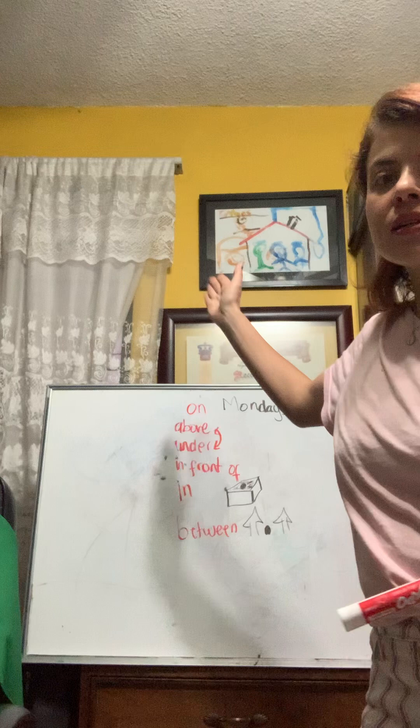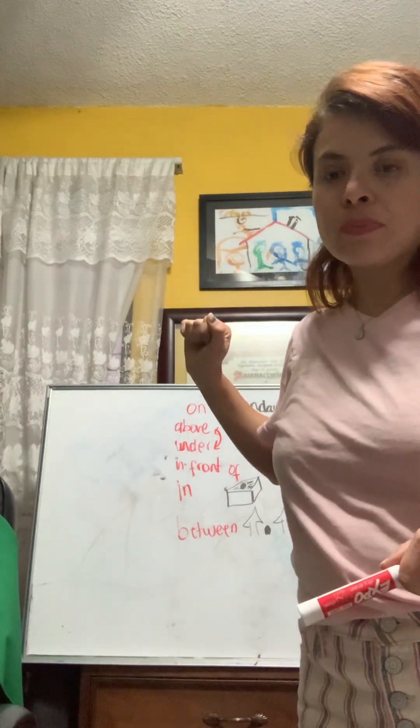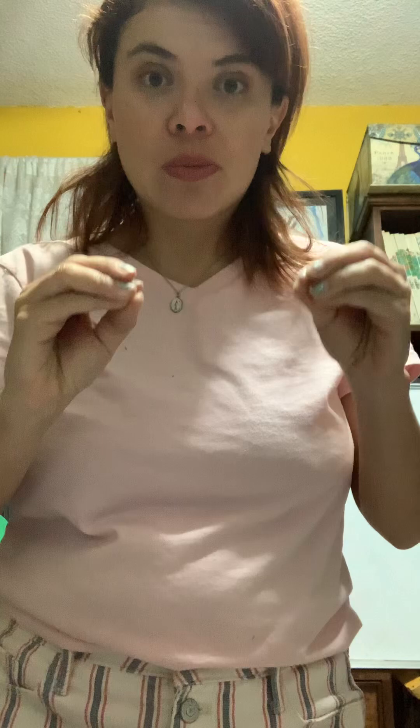We also have 'next to.' For example, the board or the diplomas are next to the window. These are the most common prepositions of place — we use them to mention or describe where something is in a very specific location. I hope you liked this video. See you in the next one, bye bye!